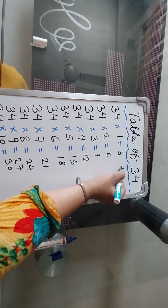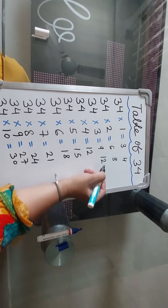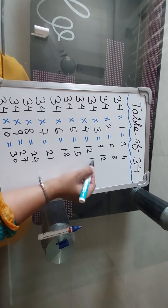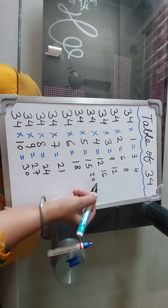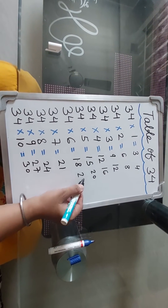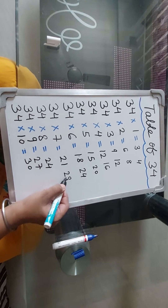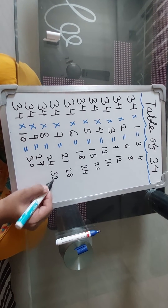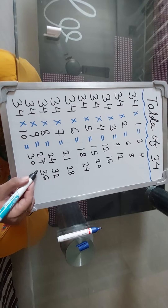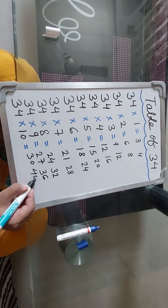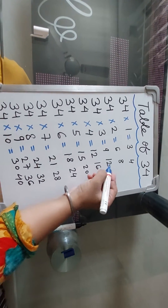4 ones are 4, 4 twos are 8, 4 threes are 12, 4 fours are 16, 4 fives are 20, 4 sixes are 24, 4 sevens are 28, 4 eights are 32, 4 nines are 36, 4 tens are 40. Then you can add them.